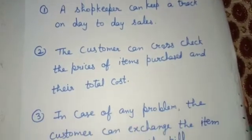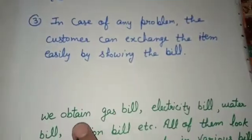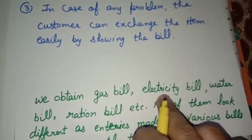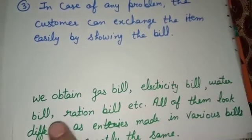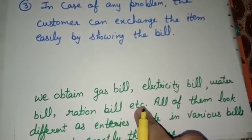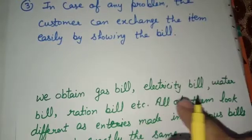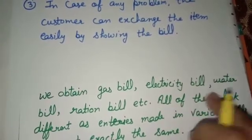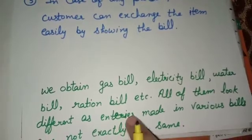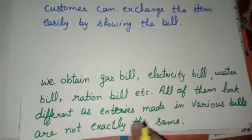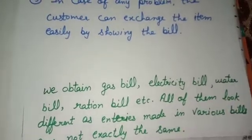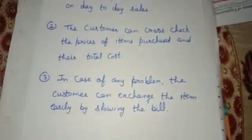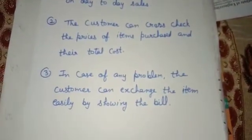After this, we have some kinds of bills. As we obtain in our houses: gas bill, electricity bill, water bill, ration bill, etc. All bills are not the same — all of them look different, as the entries made in various bills are not exactly the same.